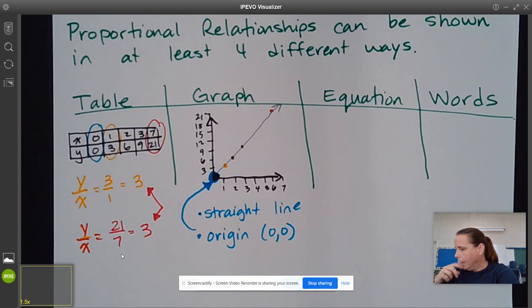So we can also represent this with an equation. So our equation, our two variables are, so this is y, this is x, our equation would look something like y.